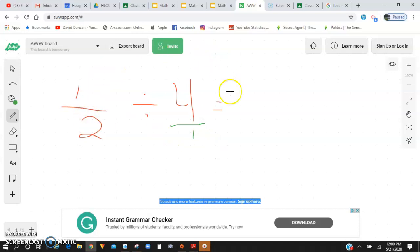Now when I'm dividing fractions, I want to keep the first fraction the same, change the sign to multiply, and then flip the second fraction. I believe you guys did this with Ms. Smith, but I could be wrong.